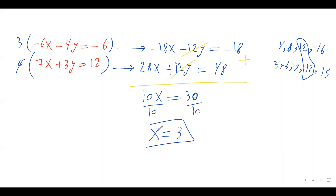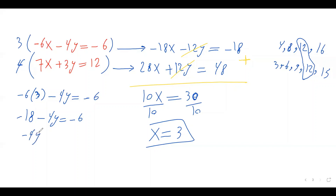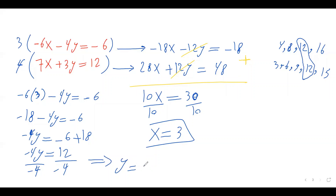Now I substitute x equals 3 into one of the original equations. I'll use the first one: negative 6 times 3 minus 4y equals negative 6. That's negative 18 minus 4y equals negative 6. Moving negative 18 to the right side gives negative 4y equals negative 6 plus 18, which is 12. Dividing both sides by negative 4, y equals 12 over negative 4, which is negative 3.